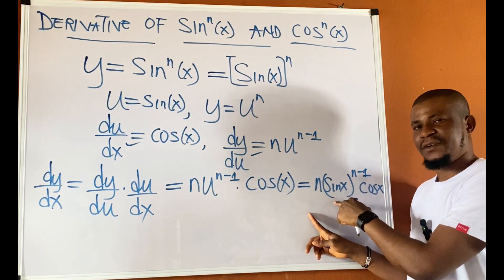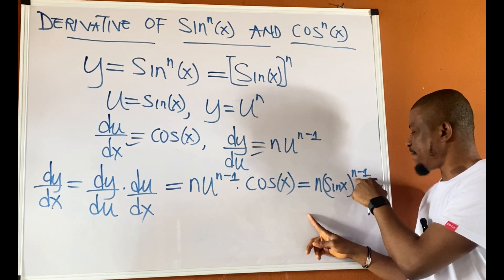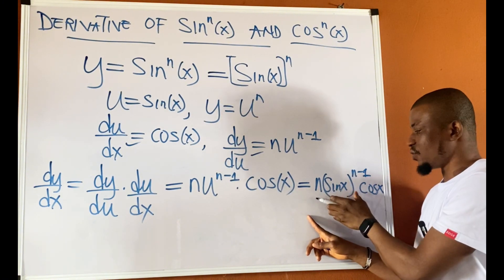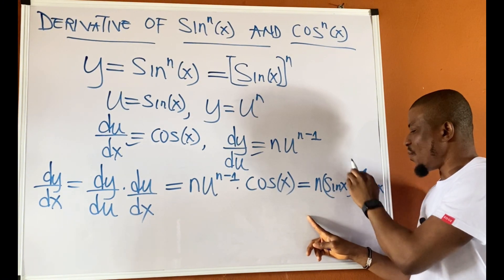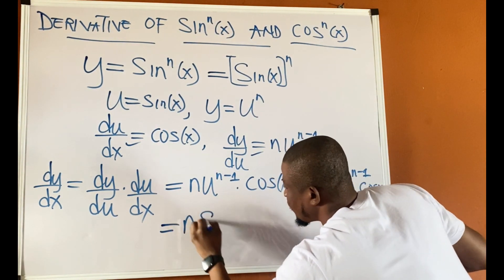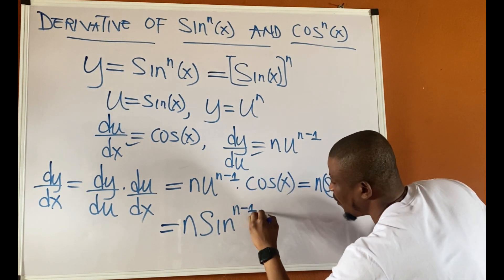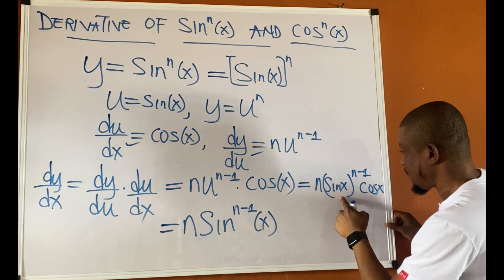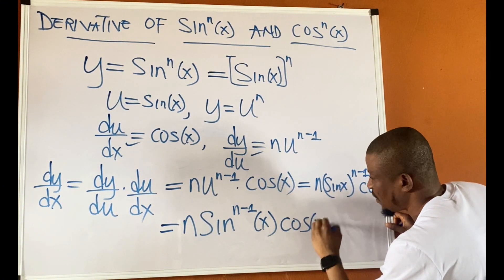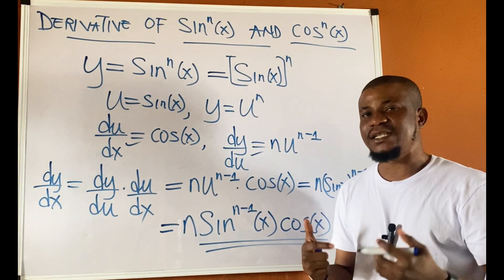Now, if you have a trig function to any power n−1, this power n−1 should be placed on the trig value itself. Take this power and place it on the trig value. So we would have n·sin^(n−1)(x) times cos x, and this will be our derivative — our dy/dx.